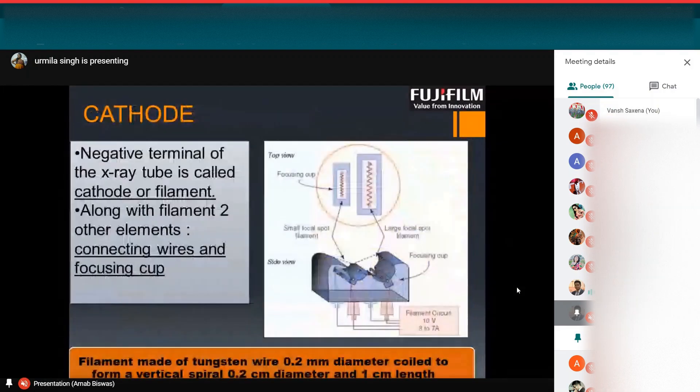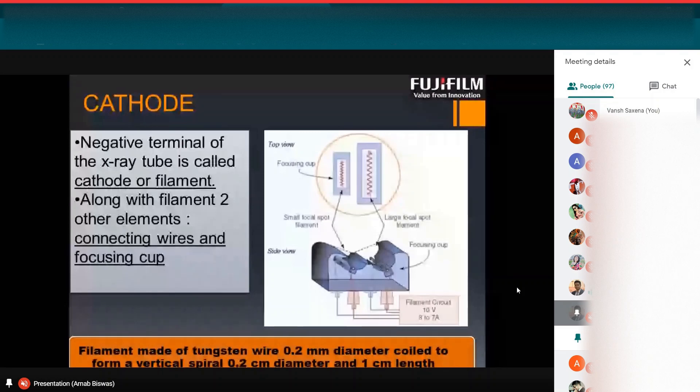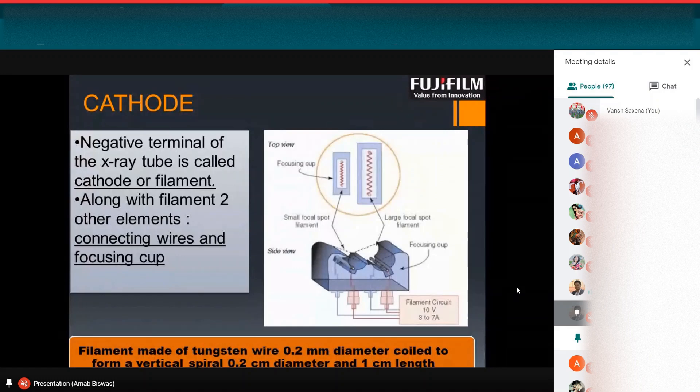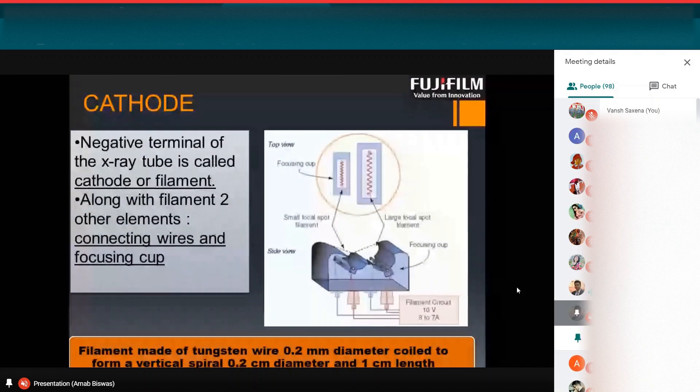Cathode is a negative terminal in the X-ray tube. There is cathode along with two filament. Cathode filament we have in modern day X-ray tubes. Along with two filament, the other elements are connecting wires and focusing cup. Filament made of tungsten wire, 0.2 mm in diameter, coiled to a form of vertical spiral, 0.2 cm in diameter and 1 cm in length.